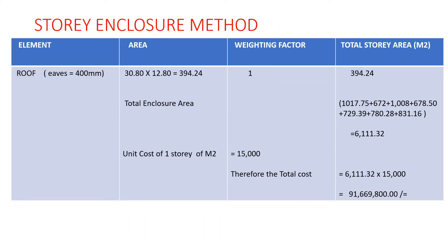For the roof, we use the external dimension plus the eaves. The eaves are 400 mm on both sides, so we add 0.8 m to each dimension: (30 + 0.8) × (12 + 0.8) = 30.8 × 12.8 = 394.24 square meters. The weighting factor is 1, so the roof contributes 394.24.